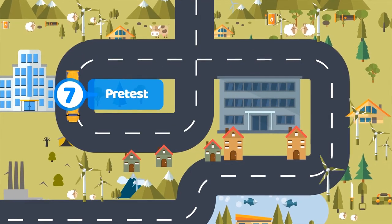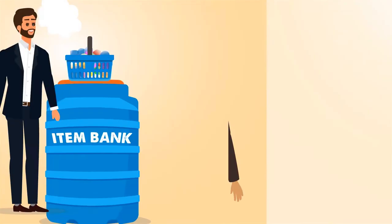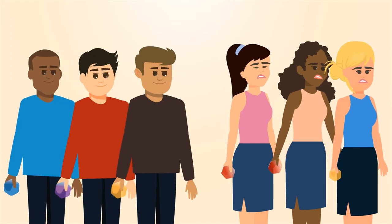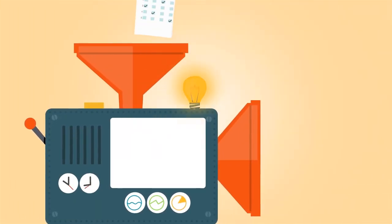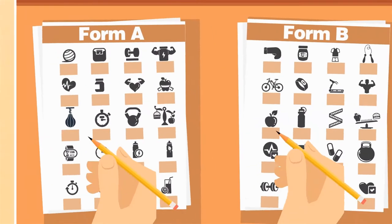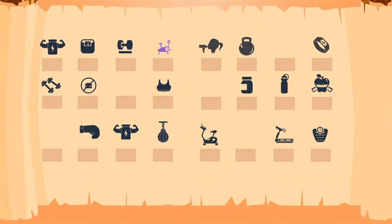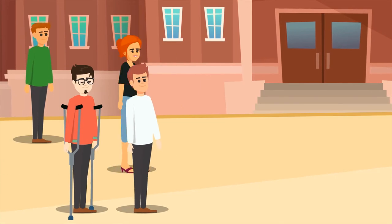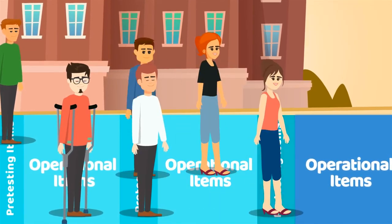Step 7: Pre-test. After items are reviewed and finalized, Aaron cannot directly put them into the real test, because he needs to make sure that items are not biased towards certain groups of examinees. The way to identify biased items is to pre-test them with candidates. Pre-testing can also help Aaron understand item characteristics, such as difficulty, which helps determine which items should be assembled in one test form. Pre-testing is usually done by embedding pre-test items in real tests — if you took a standardized test in grade school or a college admissions test, you likely took several pre-testing items even if you weren't aware of it.